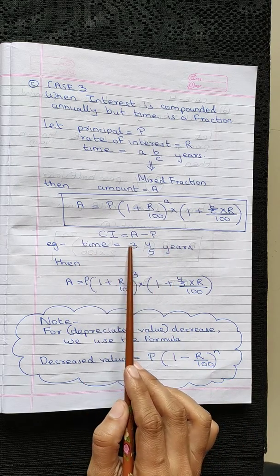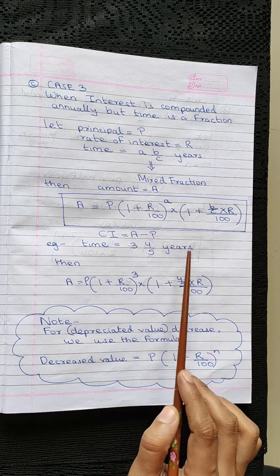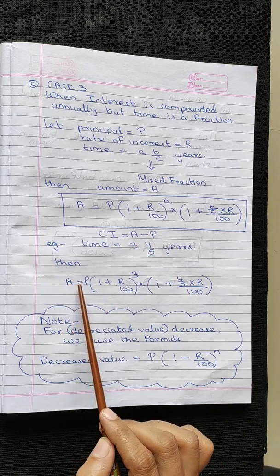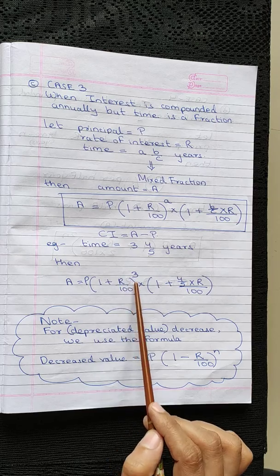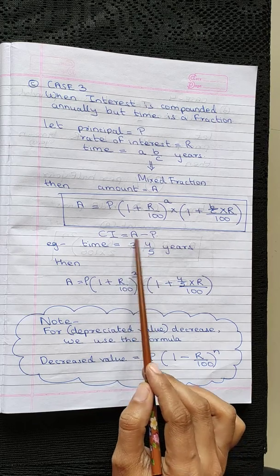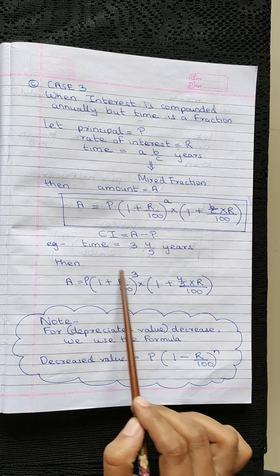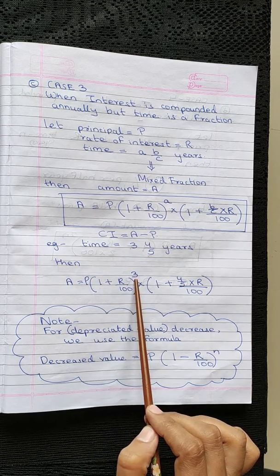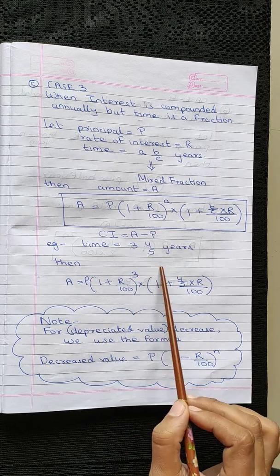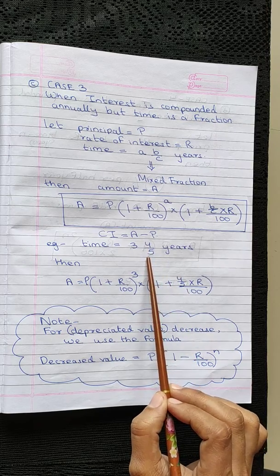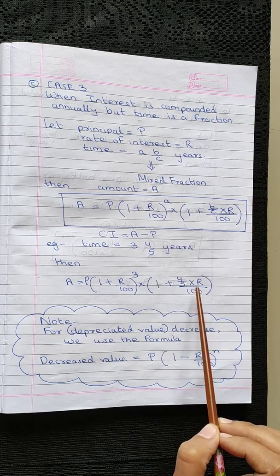Example: time is equal to 3 and 4 upon 5 years. In this case, A is equal to P into 1 plus R upon 100. The whole number of the time period is 3, so in step 1 we will raise it to the power 3, and in the second step 4 upon 5 will be used.